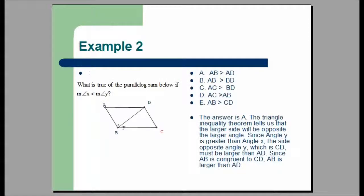In example two, we are given a multiple choice question. The question asks what is true of the parallelogram below if the measure of angle x is less than the measure of angle y. There are two things to note: the first is that the figure is not necessarily drawn to scale. The second is that we can think of AB and DC as parallel lines cut by the transversal BD. Therefore, by alternate interior angles, angle BDC is also equal to x.